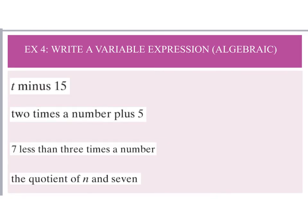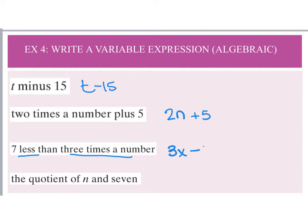Example four continues writing variable expressions. 'T minus 15' is straightforward. 'Two times a number' gives 2n plus 5. 'Seven less than three times a number' becomes 3x minus 7. And 'the quotient of n and seven' would be n divided by seven.